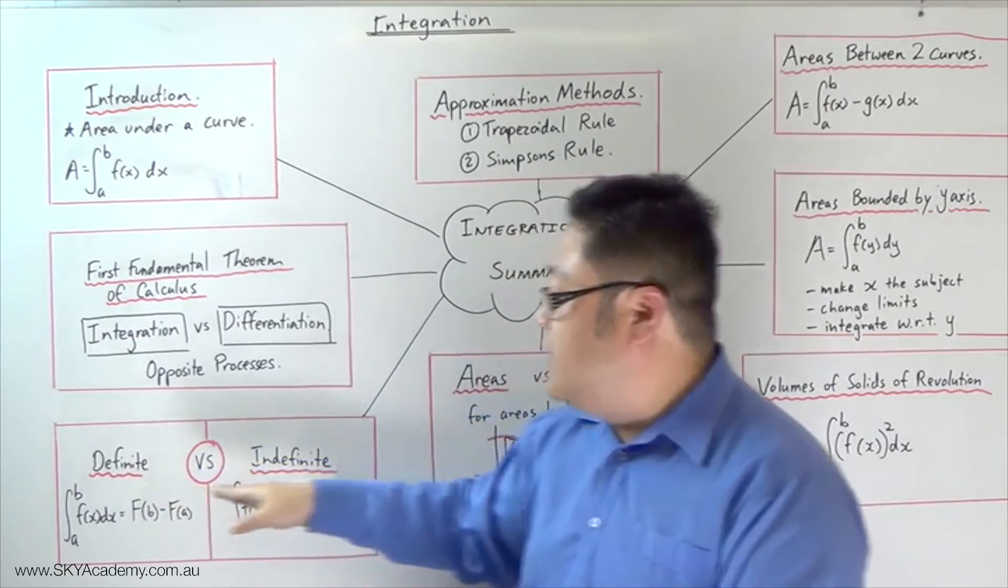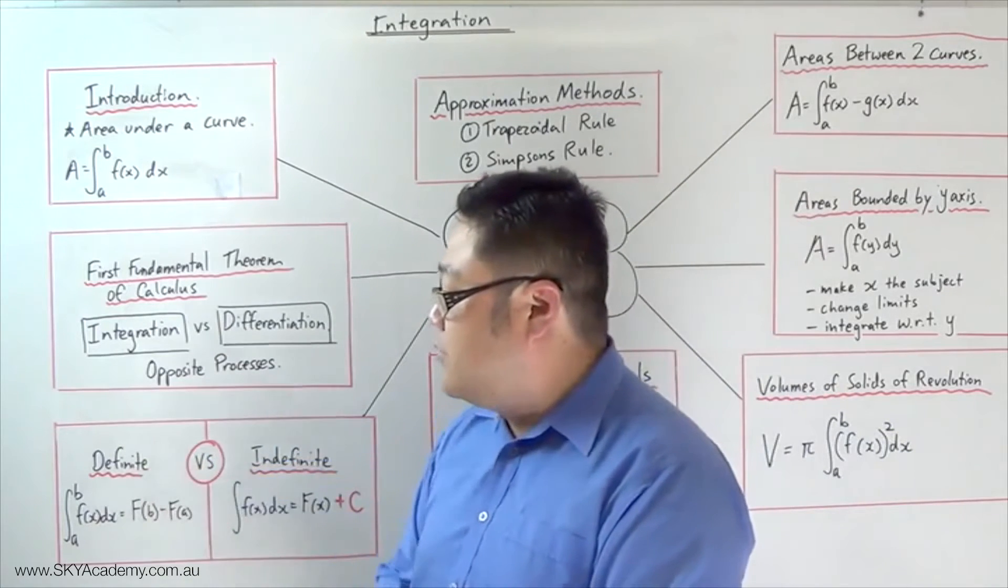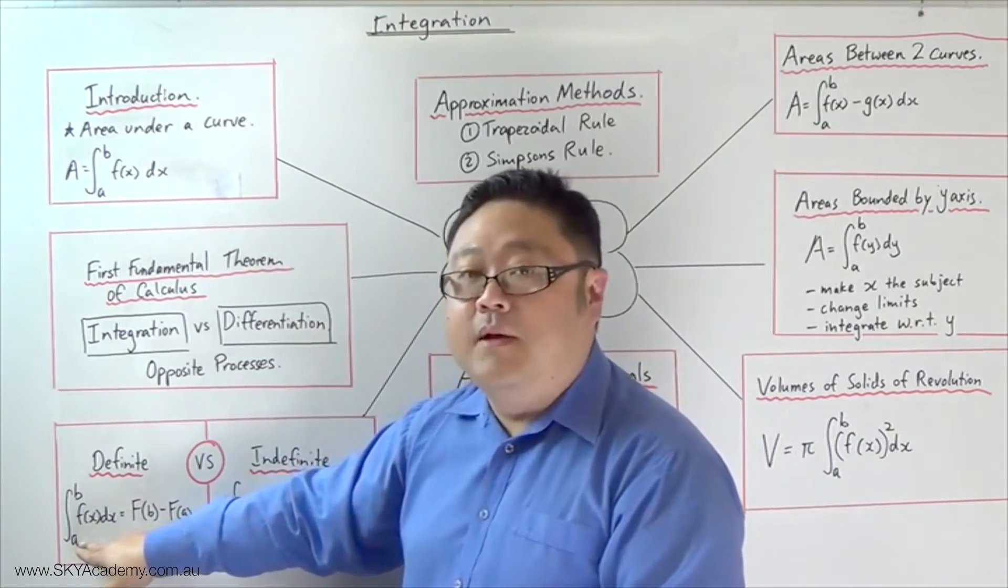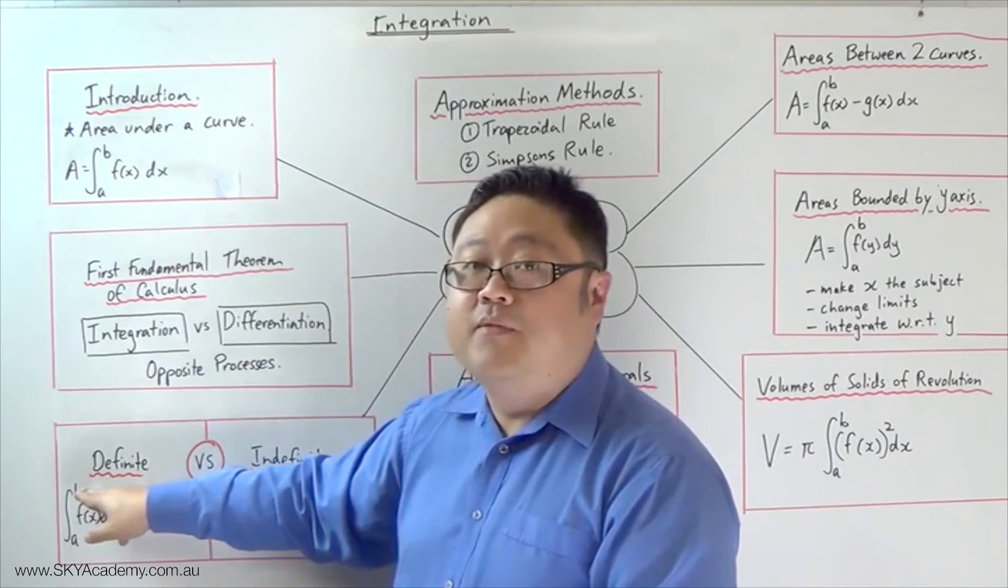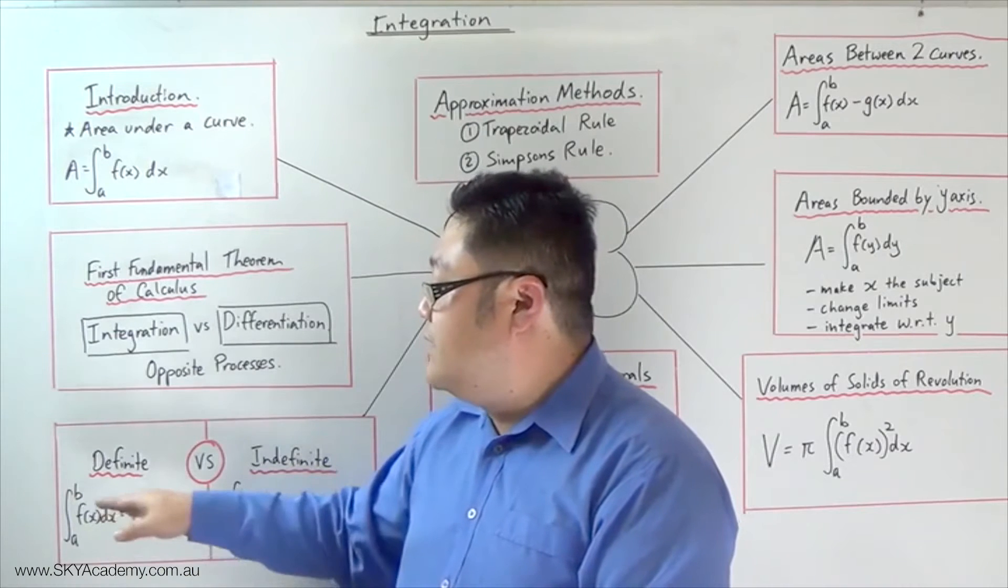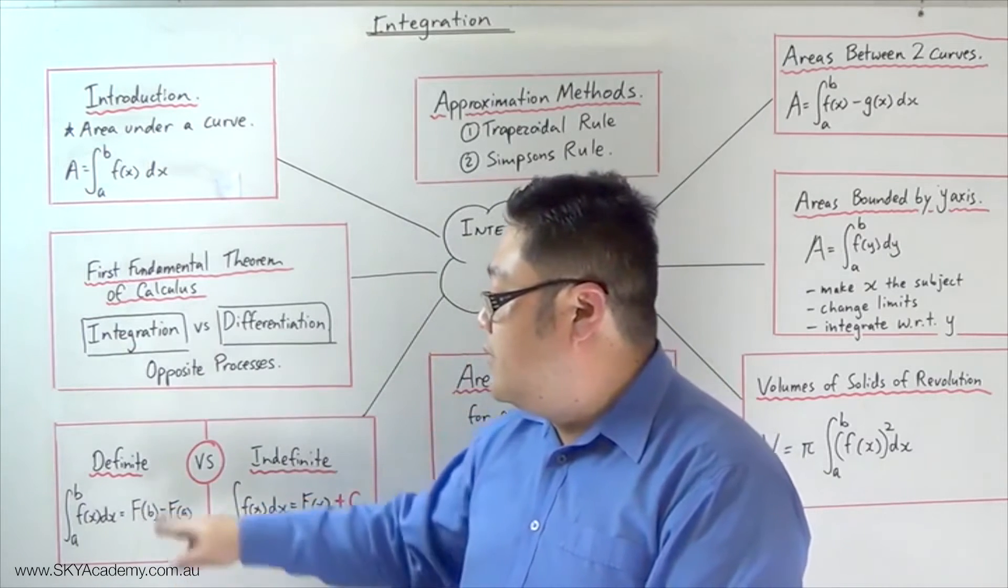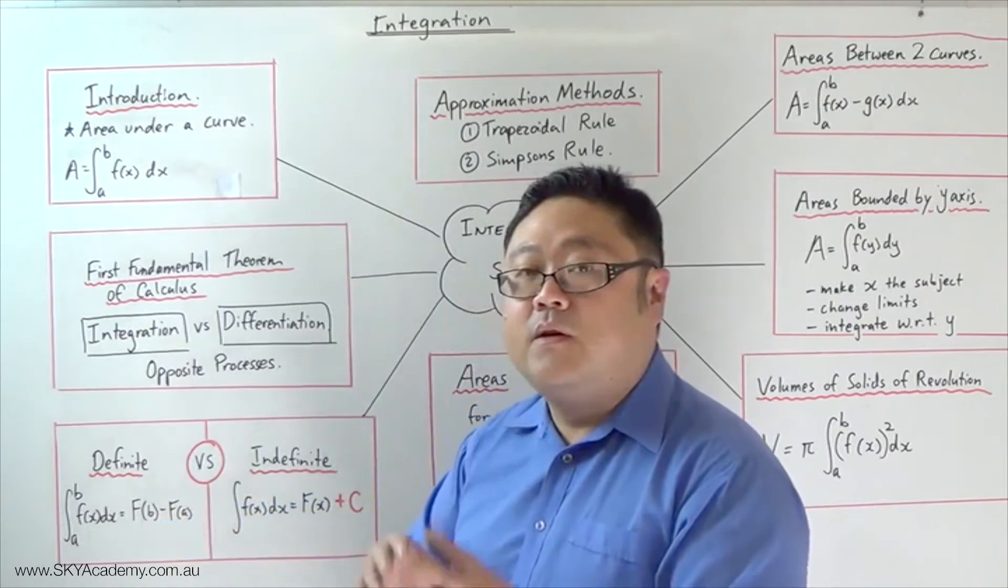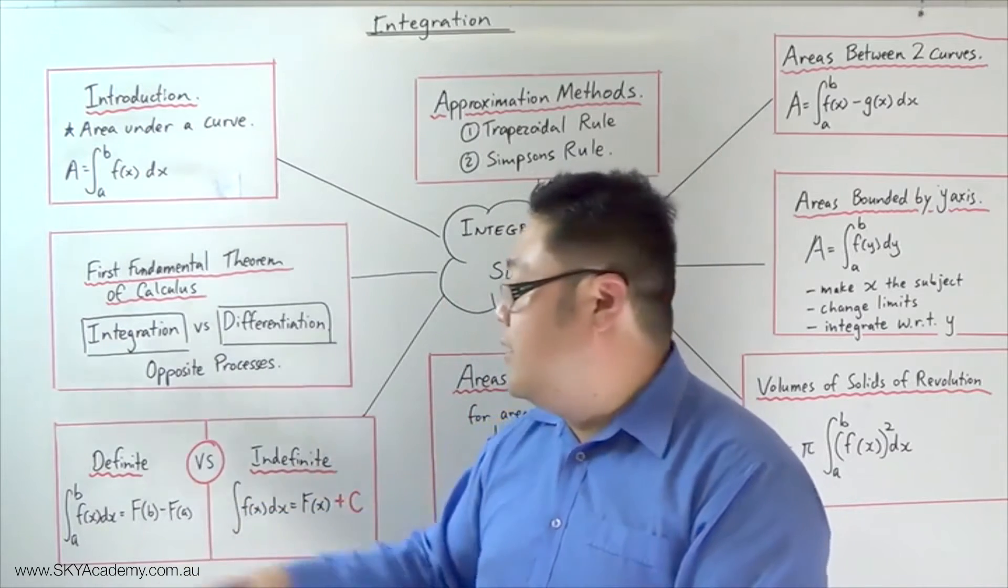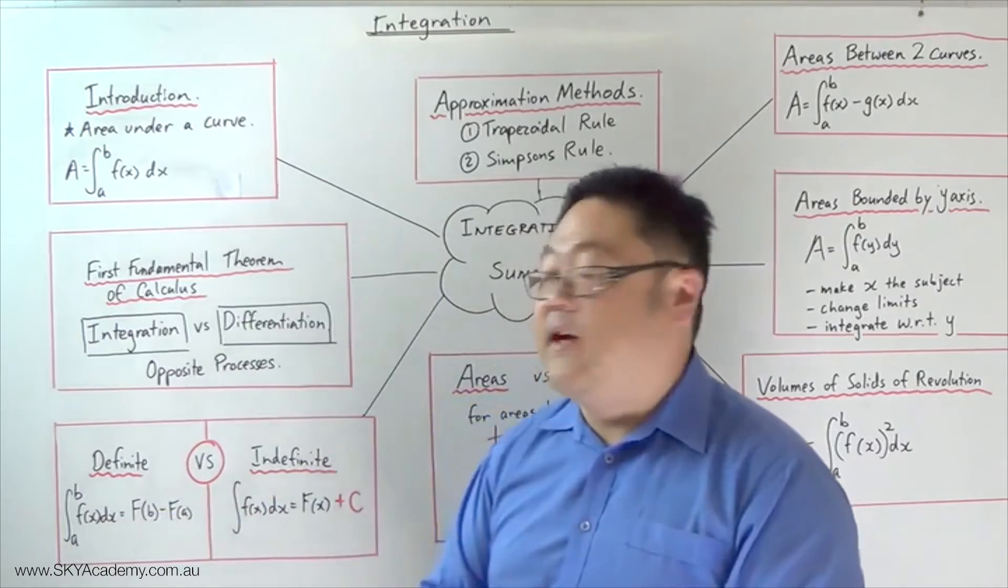We looked at the difference between a definite integral and an indefinite integral. The definite integral is basically the area between two set boundaries, the boundary a, the limit of which is written on the bottom, and the boundary b, the limit of which is written on the top. The result of a definite integral is the primitive function of that function with b substituted into it minus the primitive function with a substituted into it. That will give you the area under a curve between a and b.